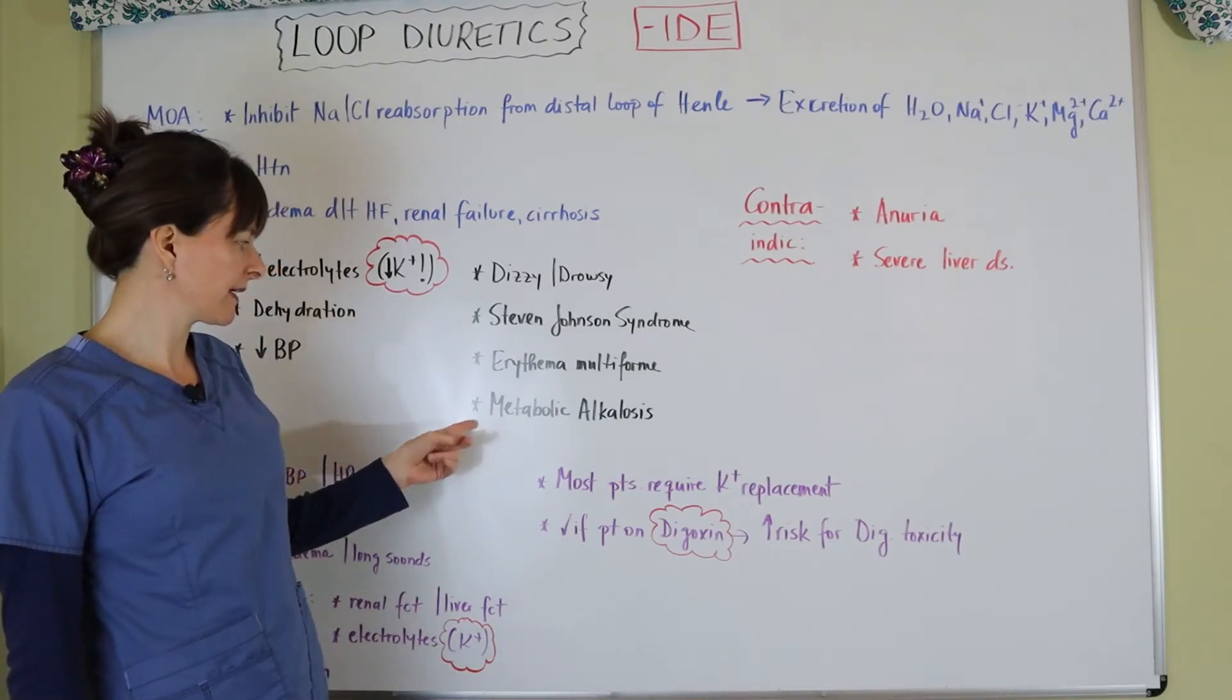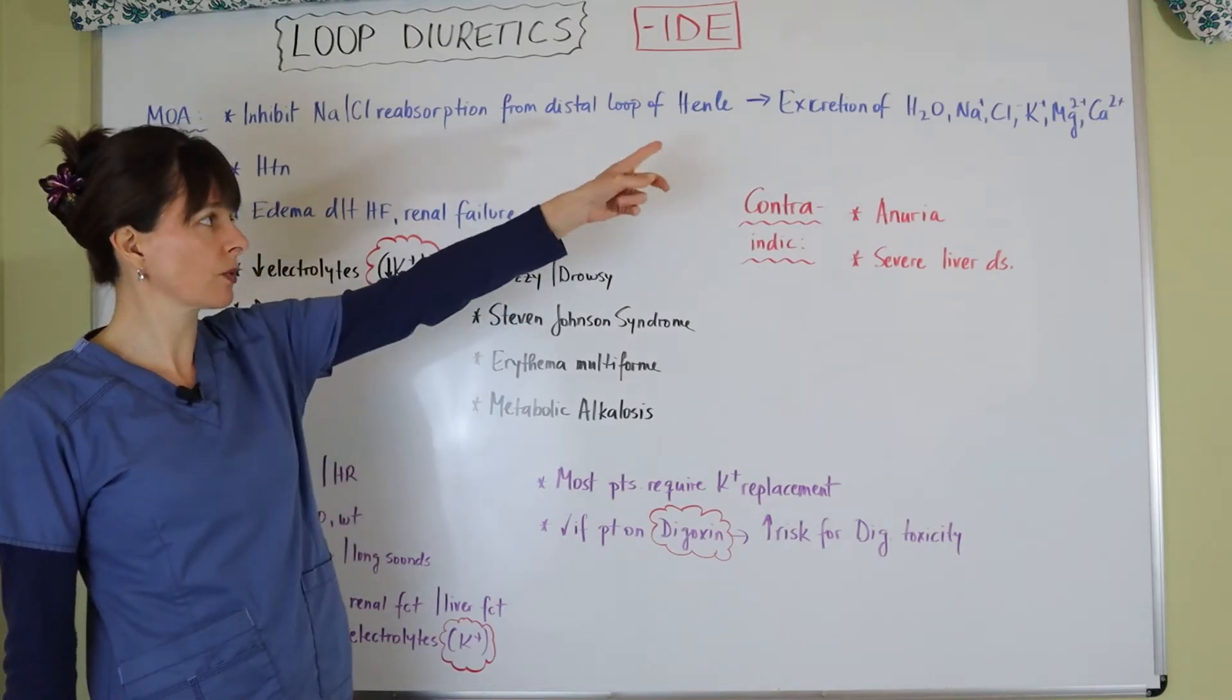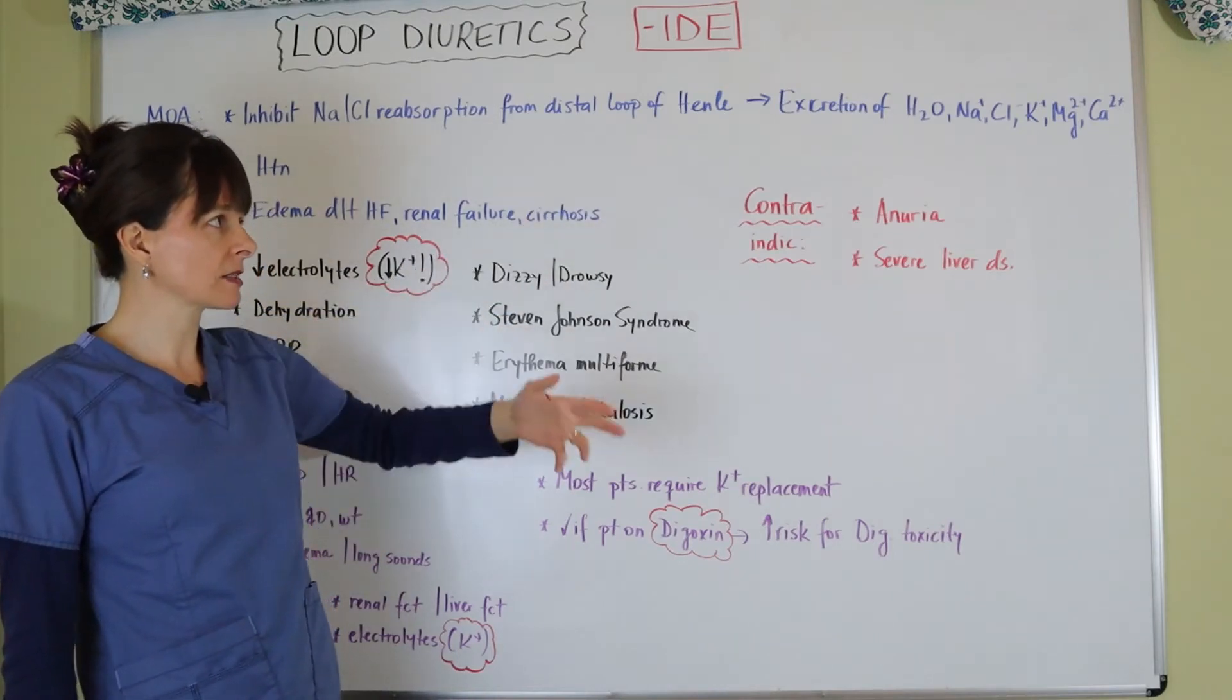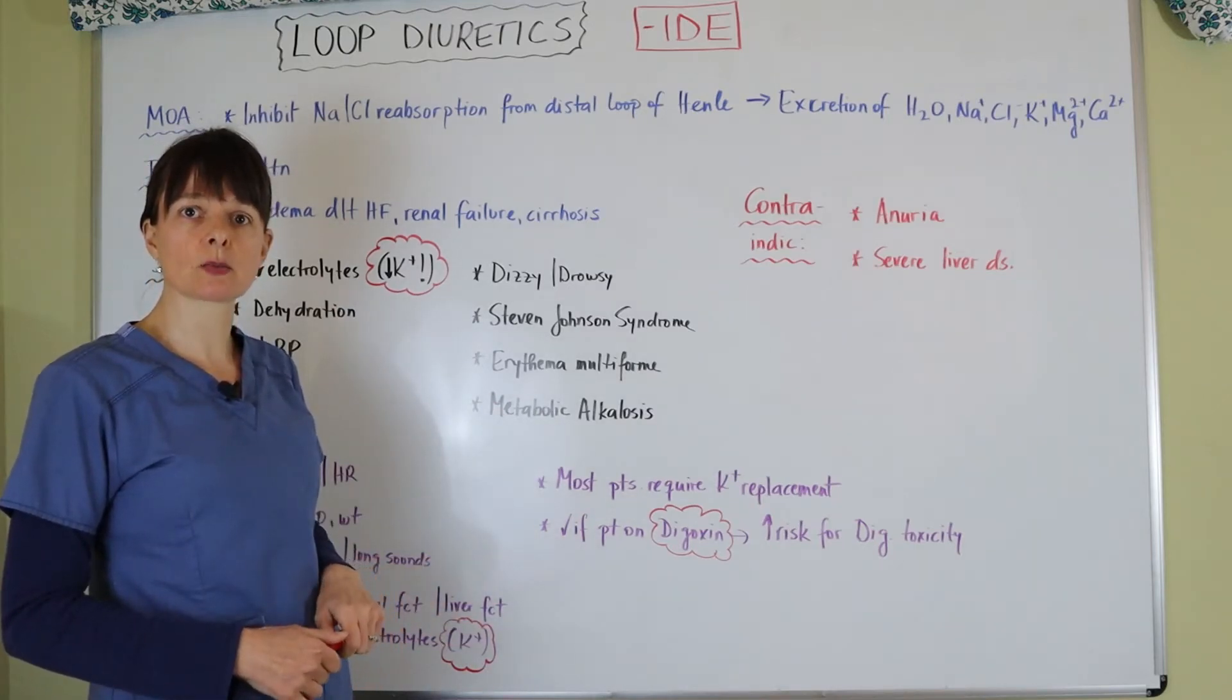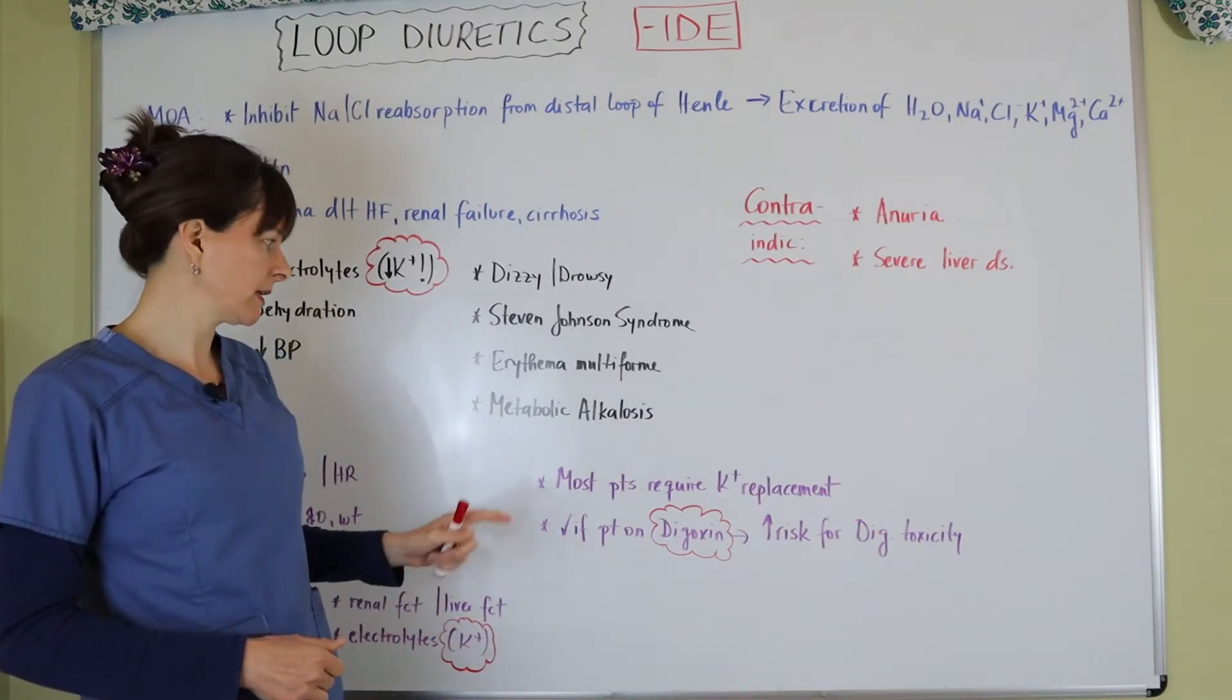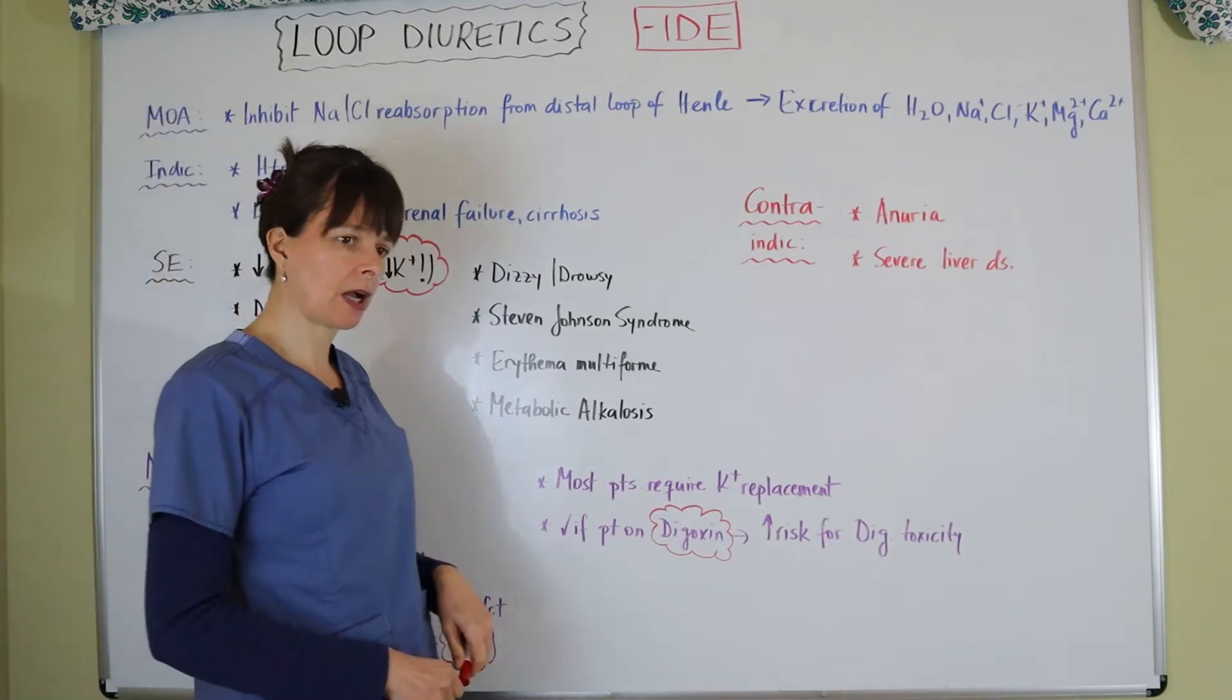But another side effect is metabolic alkalosis because we are excreting all these electrolytes as well as water. And then remember that the kidney regulates hydrogen ion as well as bicarbonate, and so it can lead to metabolic alkalosis.